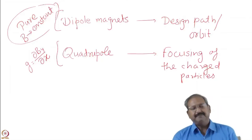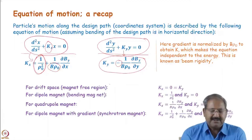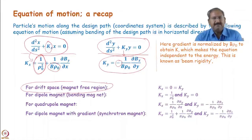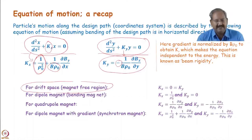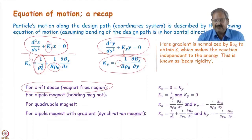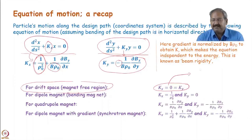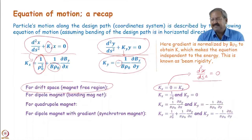The simplest structure in an accelerator is the drift space — a vacuum chamber connecting two magnets or two points with a straight line. There is no magnetic field over this region, and the particle goes straight without feeling any force. So any trajectory passing through it continues on its course. Drift space has no K, so in both horizontal and vertical planes, Kx and Ky are zero. The equation of motion becomes d²x/ds² = 0 and d²y/ds² = 0, which is basically a differential equation describing a straight line.